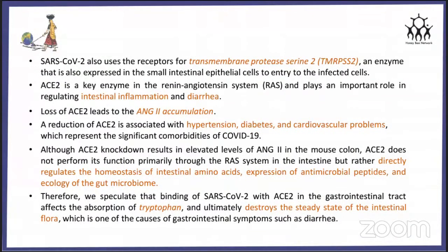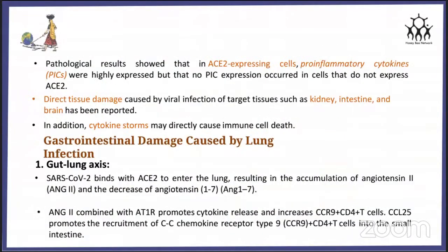Although ACE2 knockdown results in elevated levels of ACE and angiotensin II in the mouse colon, ACE2 does not perform its function primarily through the RAS system in the intestine but rather directly regulates the homeostasis of intestinal amino acids — including expression of antimicrobial peptides and ecology of the gut microbiome. Mice with ACE2 knockdown have significantly reduced serum tryptophan levels. Tryptophan is essential for niacin synthesis in the body, and insufficient intake of niacin or tryptophan is the main cause of pellagra. More than 90% of patients with pellagra will eventually develop colitis. Therefore, binding of SARS-CoV-2 with ACE2 in the GI tract reduces available receptors and affects absorption of tryptophan, ultimately destroying the steady state of intestinal flora — one of the main causes of GI symptoms such as diarrhea.